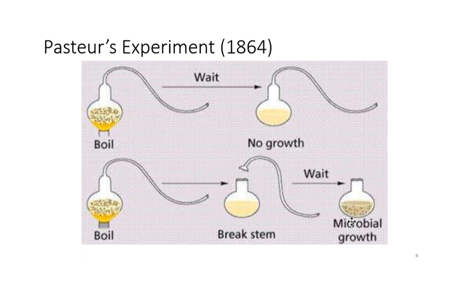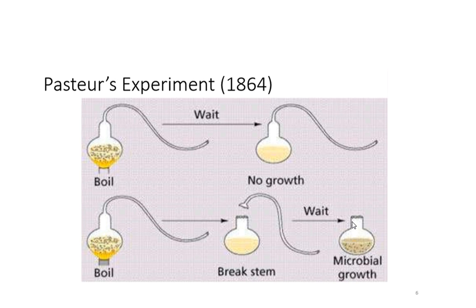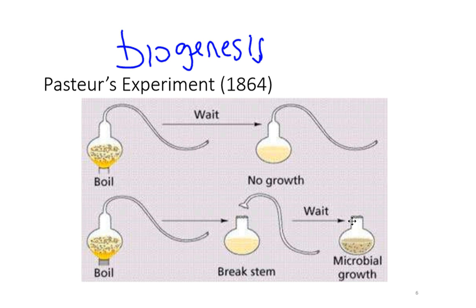Nearly a hundred years later, Louis Pasteur developed an experiment that finally disproved spontaneous generation and instead proved the idea of biogenesis — that life comes from other life. He designed a flask with a really long neck that let air in but kept microbes out. He boiled the broth and there was no growth. To prove that growth could occur in that broth, he broke open the flask and growth occurred. This finally convinced science that biogenesis is true.